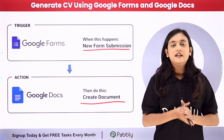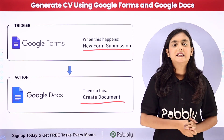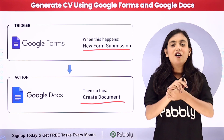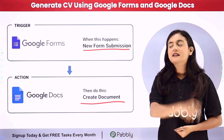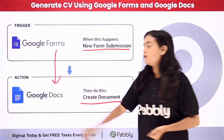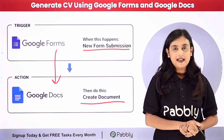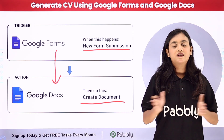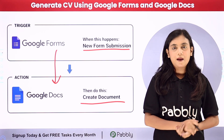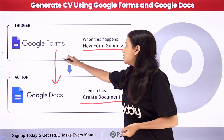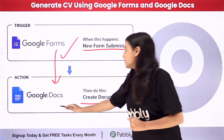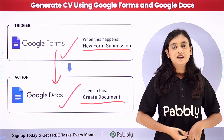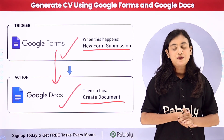To create the CV, I've already created a template for the resume in Google Docs. What we are going to do is simply create an automation between Google Forms and Google Docs using Pabbly Connect. Pabbly Connect runs on two concepts: trigger and action. My trigger application is going to be Google Forms and my action application is going to be Google Docs. Let me take you to my screen.